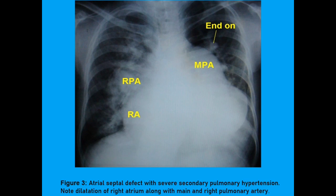Moving on to our first case — this is an X-ray from a patient who had uncorrected atrial septal defect and has now developed severe pulmonary hypertension. Note the dilatation of the right atrium, which is grossly dilated, and dilatation of the right pulmonary artery and main pulmonary arteries. These are the classical features of patients with Eisenmenger syndrome or severe pulmonary hypertension in patients with uncorrected congenital heart diseases.